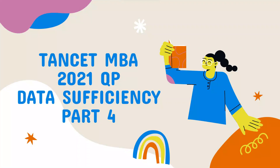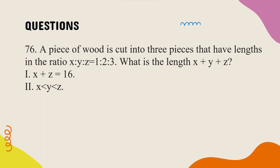Hi friends. This 2021 question paper will cover the data sufficiency section. We'll look at the last 5 problems in this video. Now we have the 76th problem. A piece of food is cut into 3 pieces that have lengths in the ratio x to y to z, which is equal to 1 to 2 to 3. What is the length x plus y plus z?